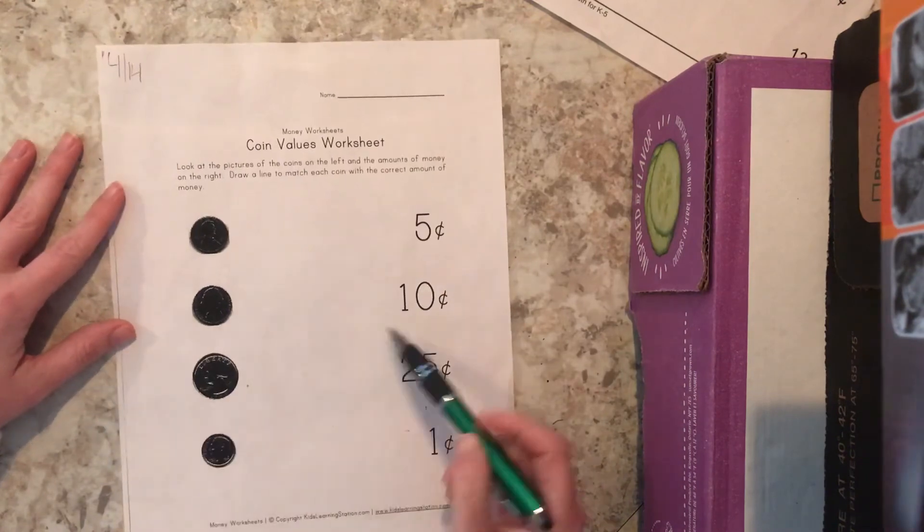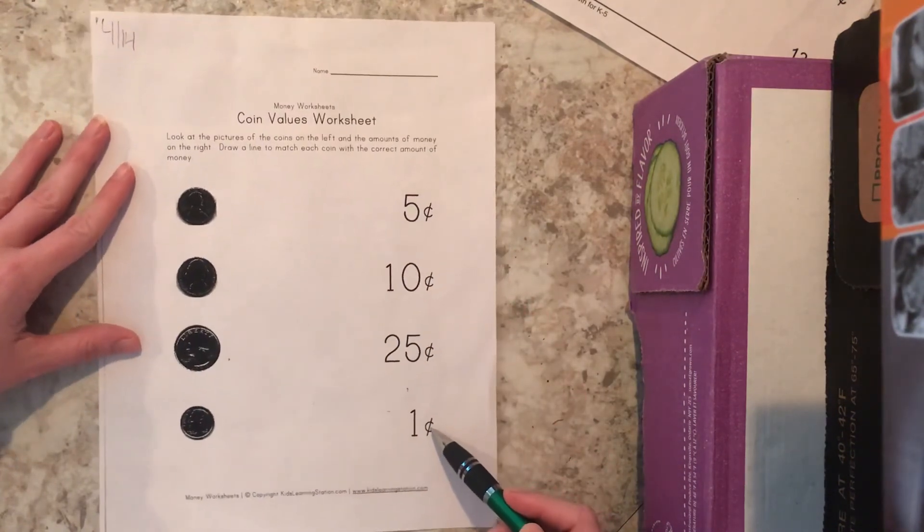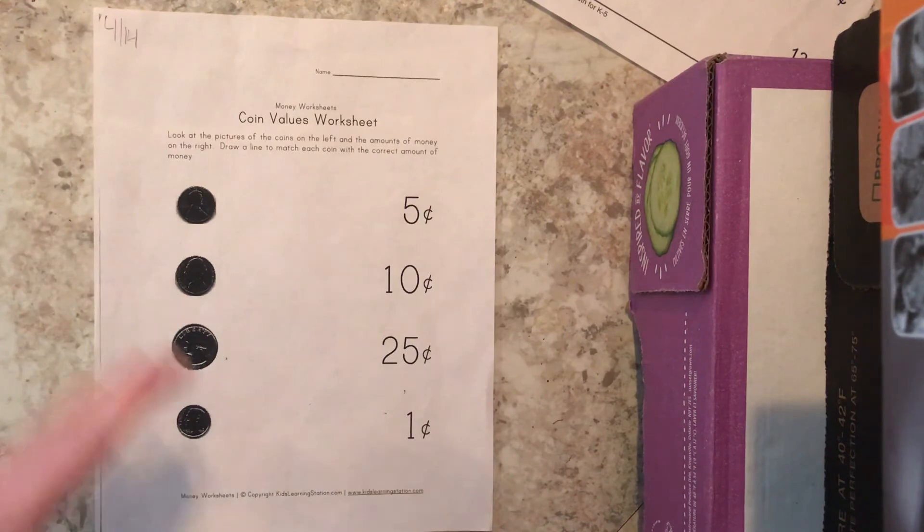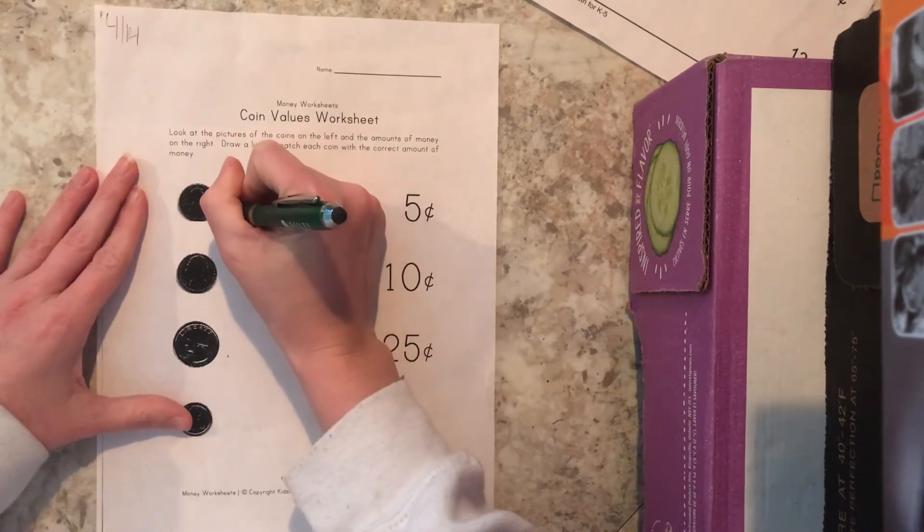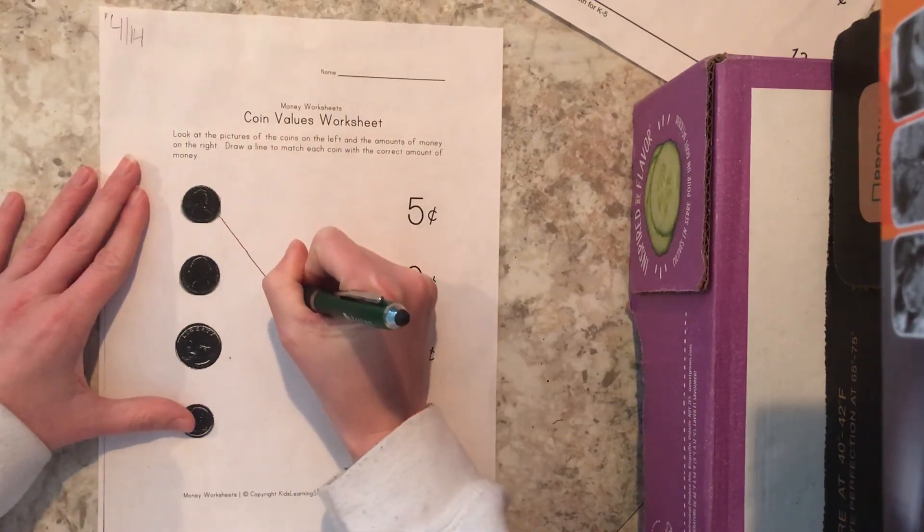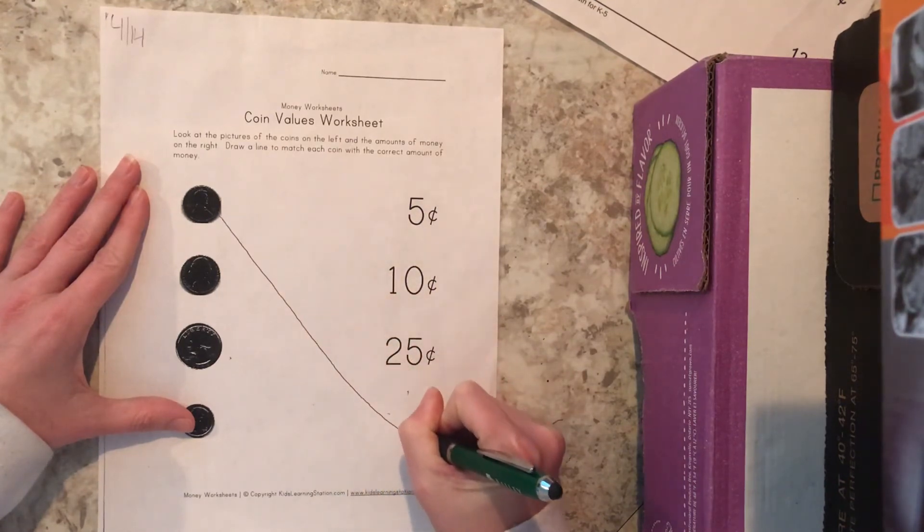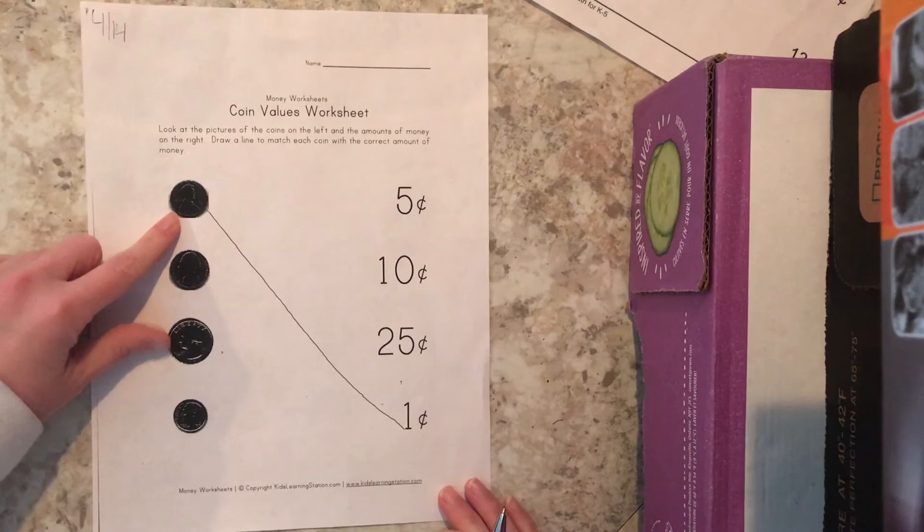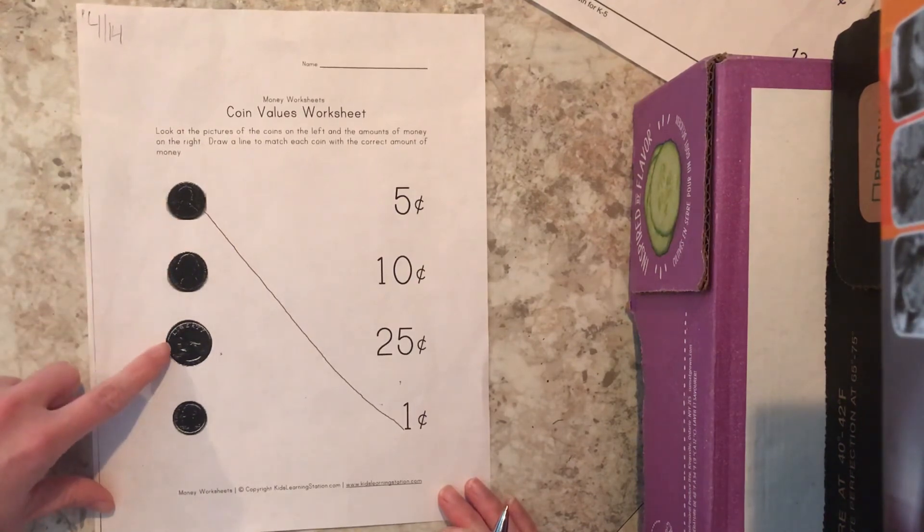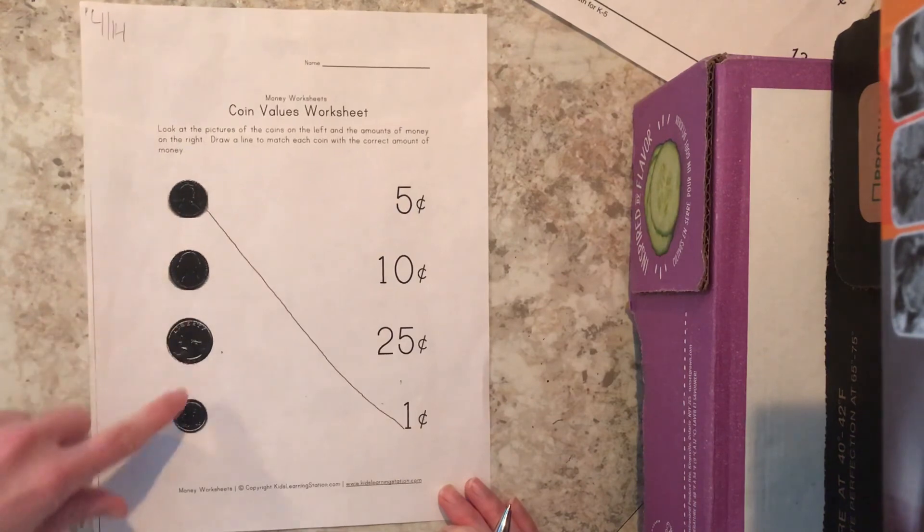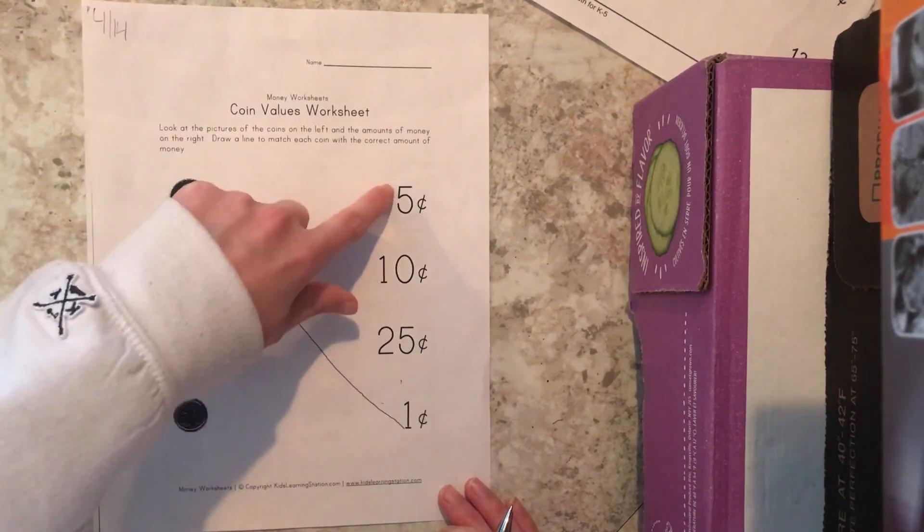And just like last week we draw a nice line to one cent. Try really really hard to figure out what these other coins are and draw a line to what value it is.